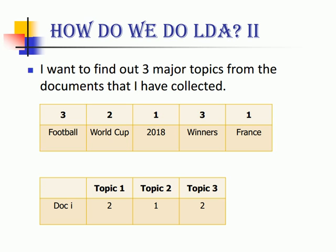Given a document I which has words like football, World Cup, 2018, France, and so on, LDA will assign a random number — 1 out of 3 — because I want 3 topics derived from the documents. So I start off with topic assignments like 3, 2, 1, 3, 1, and so on. Then it calculates a document-to-topic count. In that given document, how many times does topic 1 come, how many times does topic 2 appear, or how many times does topic 3 appear? I have a count of this.